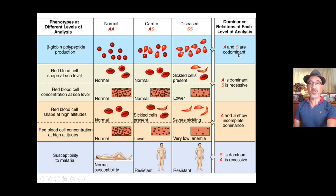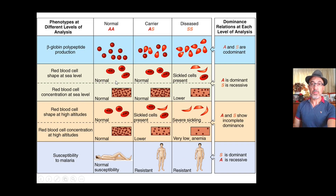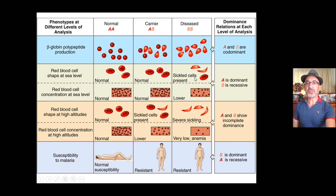The term co-dominant means that both alleles are expressed in the heterozygote. If you look at the shape and concentration of red blood cells at sea level — where we have high atmospheric pressure and more oxygen — the homozygote for the dominant allele and the heterozygote both have a normal phenotype with normal red blood cell shape and concentration. However, the homozygote for the HbS allele shows lower concentration of normal red blood cells and many cells begin to sickle. So under these conditions, HbA is dominant and HbS is recessive.